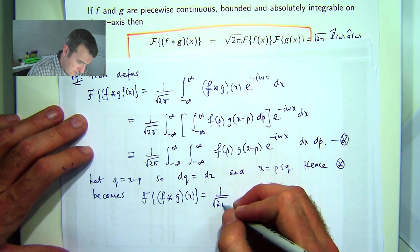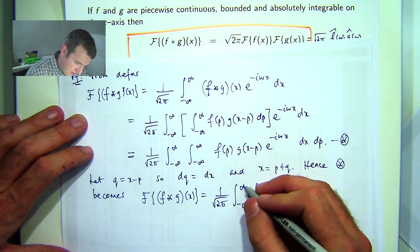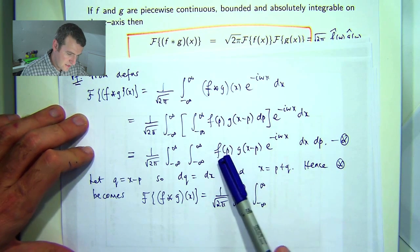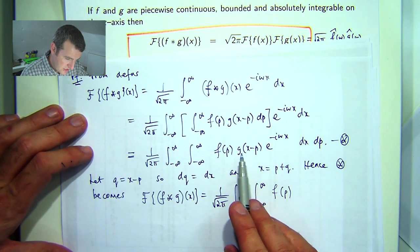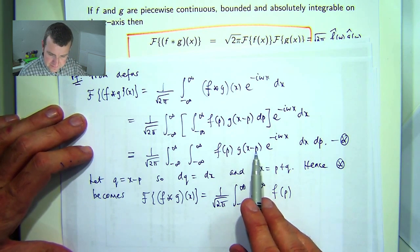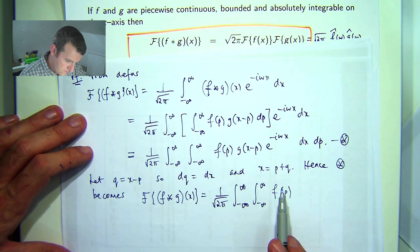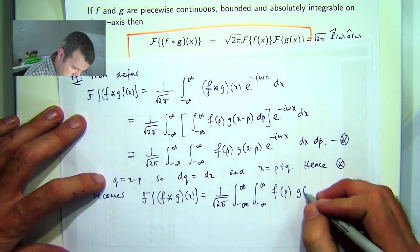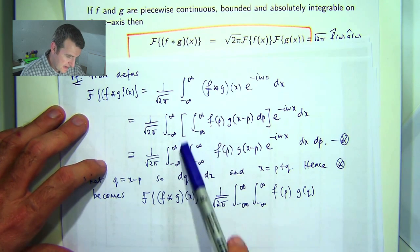Alright, so this is not going to change. g of x minus p is going to become g of q. Now I haven't done it here, but you could shift that.